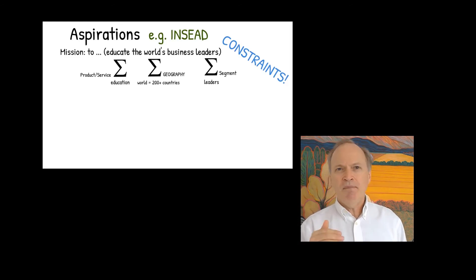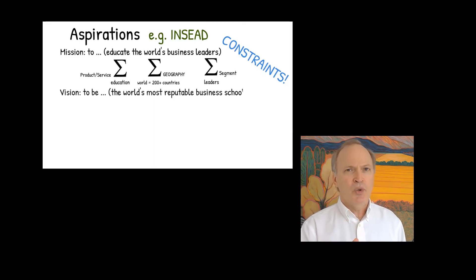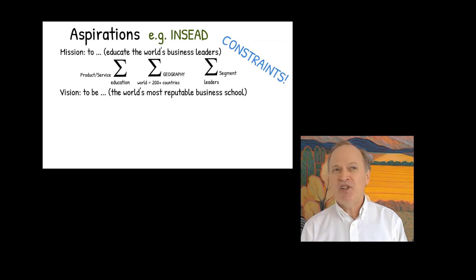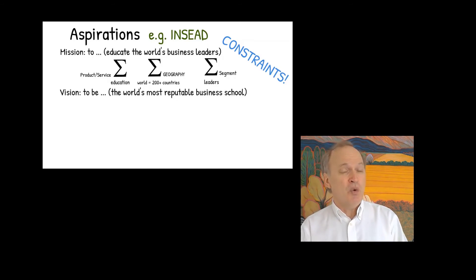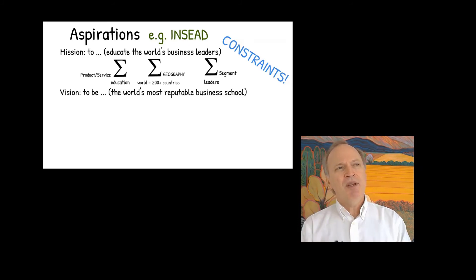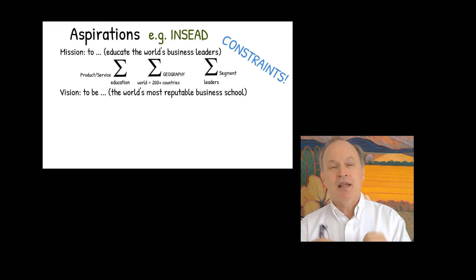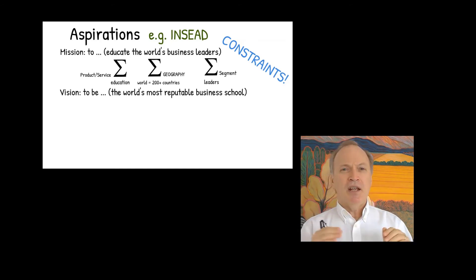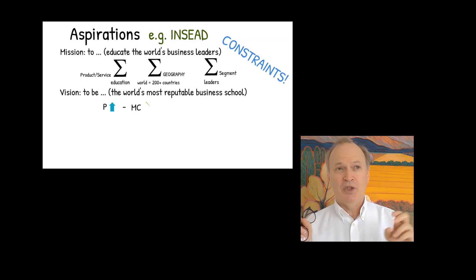A vision statement, unlike a mission statement which is to do something, is a forecast — it's to be something; it's the end of the road. Many companies won't publish the vision because it may reveal too much about your strategic intent, so it's often an internal document. For example: 'To be the world's most reputable business school.' Maybe we think Harvard, MIT, London Business School, or Wharton is more reputable — we want to overtake them.